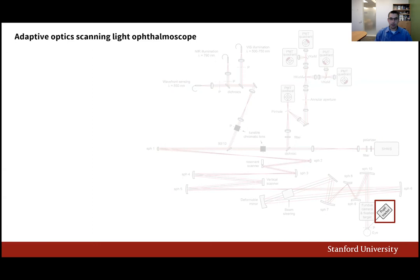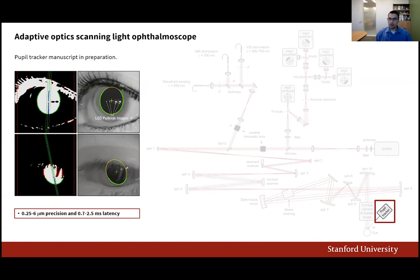Our pupil tracker, described in a manuscript in preparation, has been implemented with an optical setup for normal involuntary eye movement that achieves high precision on the order of a micron. An alternative optical setup was tested for subjects with nystagmus, allowing higher frame rates on the order of 900 to 3,000 frames per second, requiring novel line-by-line one-dimensional image processing algorithms and a robust method for discarding outliers. With this new paradigm, we delivered latencies between 0.7 and 2.5 milliseconds.